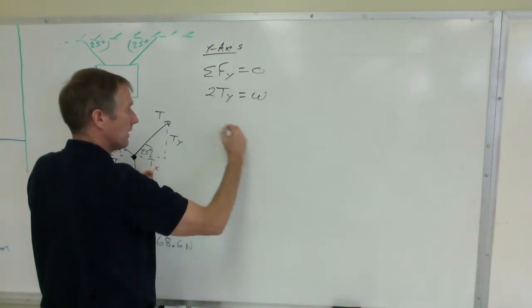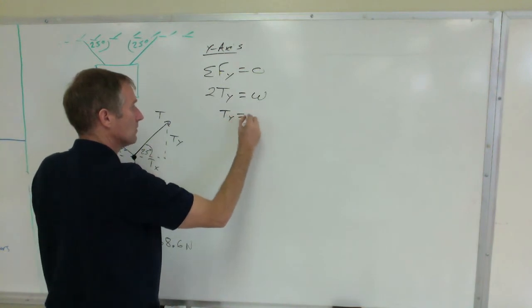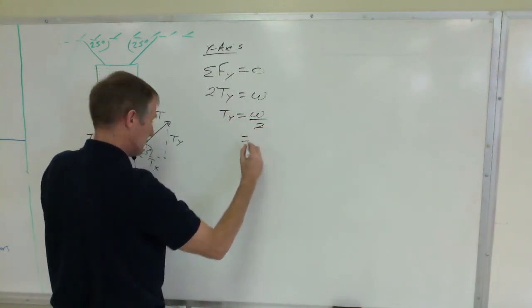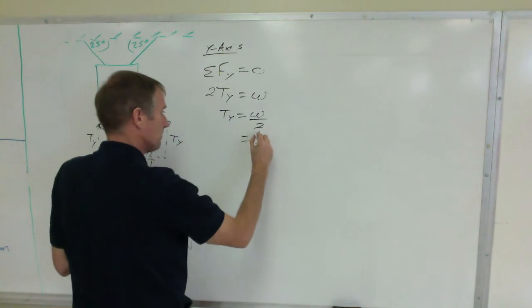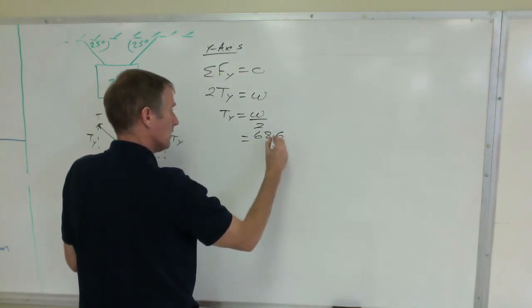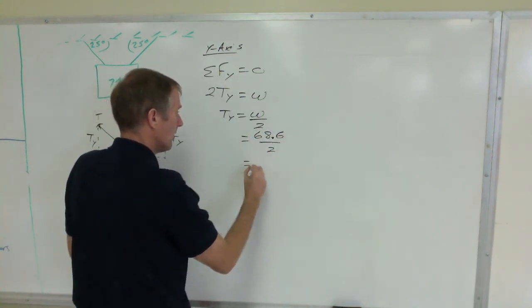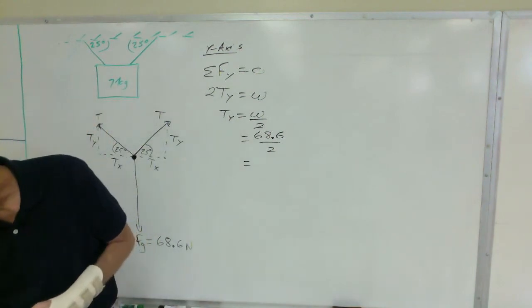And so, divide by 2, so Ty equals W over 2, which is 68.6 over 2. And that comes out to 34.3, 34.3.